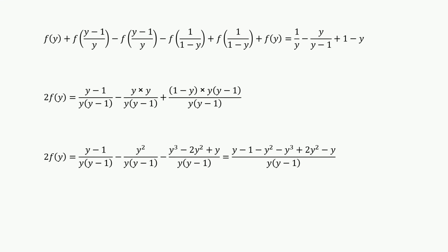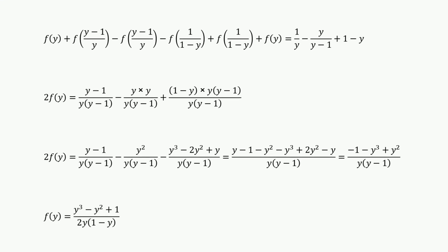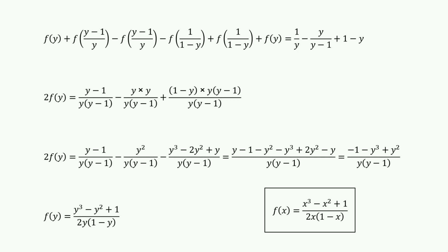Simplifying the right-hand side, we have 2 f of y equals (y cubed minus y squared minus 1) over y(y minus 1), which gives f of y equals (y cubed minus y squared plus 1) over 2y(1 minus y). Now substituting y with x, we have f of x equals (x cubed minus x squared plus 1) over 2x(1 minus x). Which is the answer.